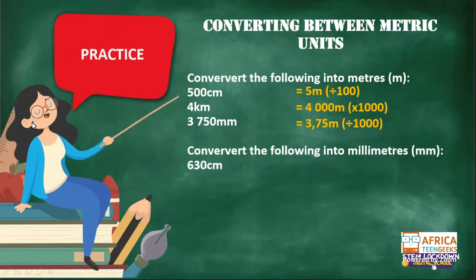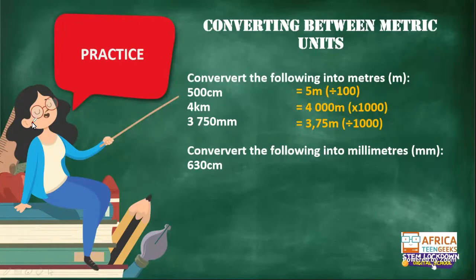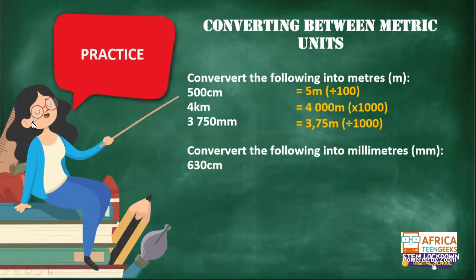Now I want everybody to convert to millimeters. 630 centimeters — how many millimeters are there in one centimeter? 10. So 630 times 10 gives us 6,300. Very nice, Megan.